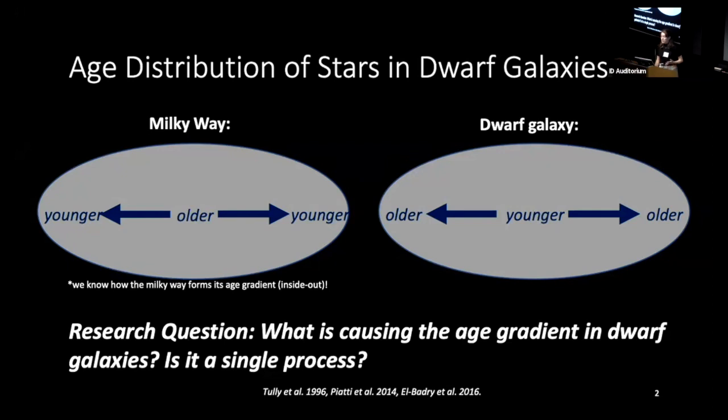Is there a single process causing this age gradient for dwarf galaxies? Is it multiple processes, et cetera?